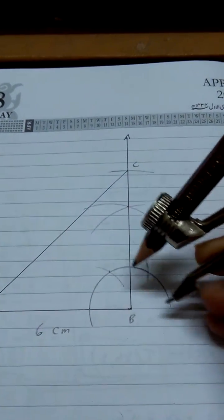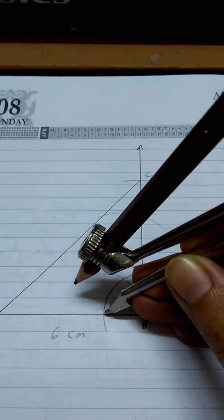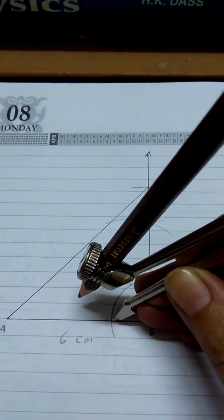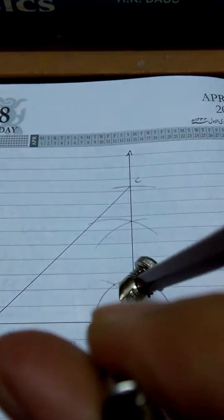Maintaining the radius of your compass, you put your needle at this point and draw an arc that I've just done over here.